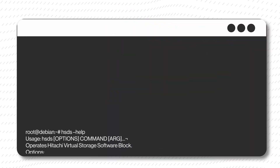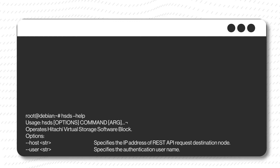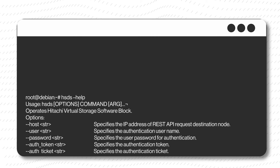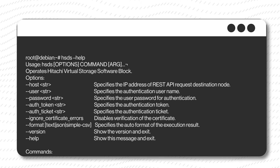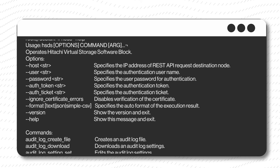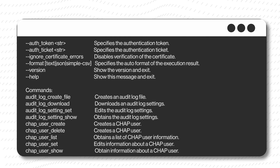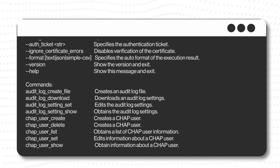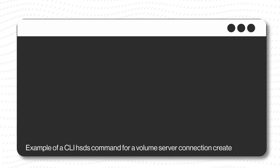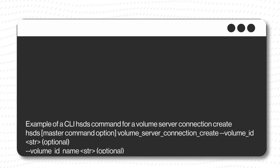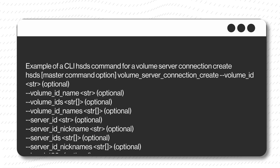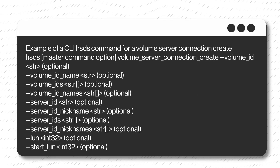You can use the CLI help command, hsds help, to find the available command options. This example shows a snippet of the many command options. The CLI hsds master command option can be used to create different volume server connections.